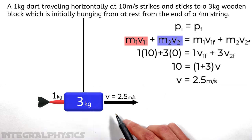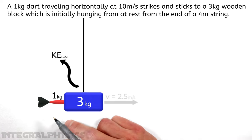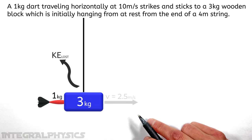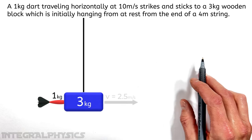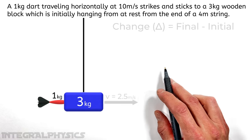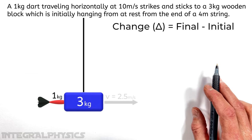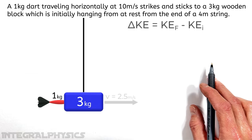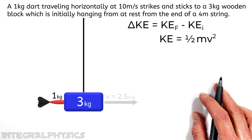So now knowing the velocity of the dart and block just after the collision, let's go through and solve for the kinetic energy that was lost when the dart collided with the block. Mathematically, we can express the energy lost in the collision as the change in kinetic energy. And change just being a final value minus an initial value.